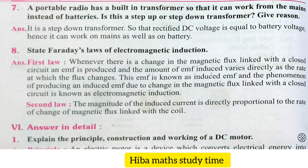8th question: State Faraday's Laws of Electromagnetic Induction. First law: Whenever there is a change in the magnetic flux linked with a closed circuit, an EMF is produced, and the amount of EMF induced varies directly as the rate at which the flux changes. This EMF is known as induced EMF, and the phenomenon of producing an induced EMF due to change in the magnetic flux linked with a closed circuit is known as electromagnetic induction. Second law: The magnitude of the induced current is directly proportional to the rate of change of magnetic flux linked with the coil.